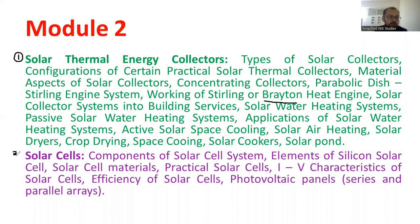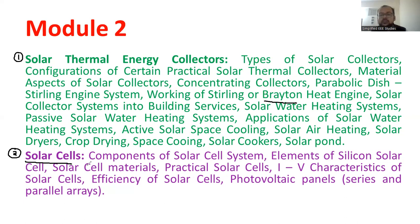Moving on to the second segment, it is the solar PV application. In that, we are going to discuss about solar cells, components of a solar system, solar materials, and different characteristics such as IV characteristics and PV characteristics. Also, we are going to discuss about the combination of series and parallel configurations. These are the major components which we will be covering in module two.